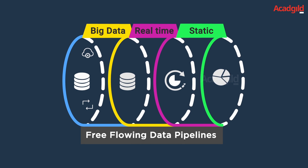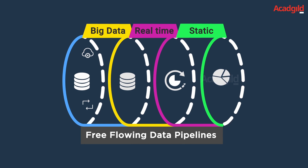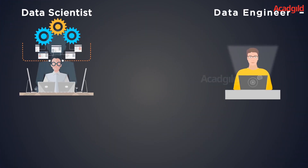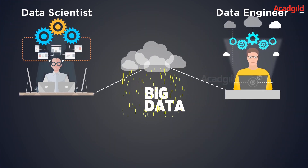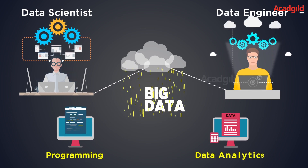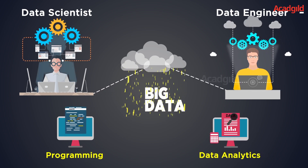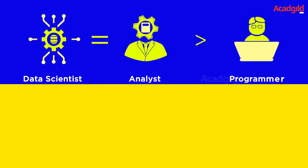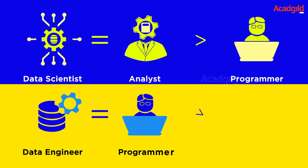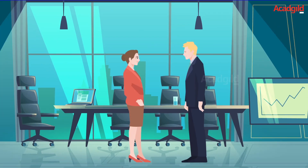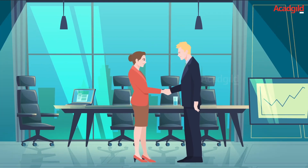The two roles make use of similar skill sets. Safe to say, both data scientists and data engineers work with big data. They both know programming and understand data analytics. Nonetheless, the data scientist is a better analyst than programmer, while the data engineer is a better programmer than analyst. The two roles are complementary, not interchangeable.